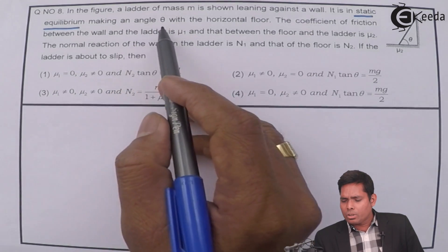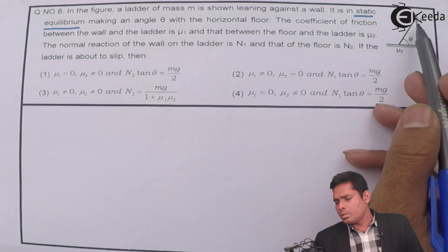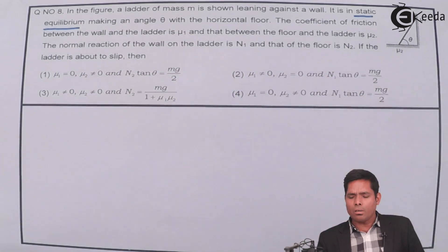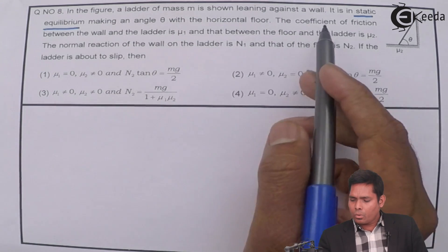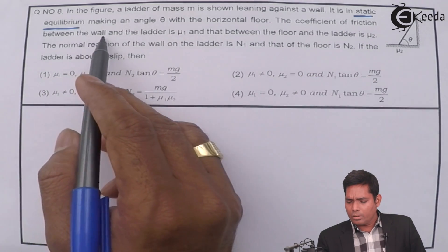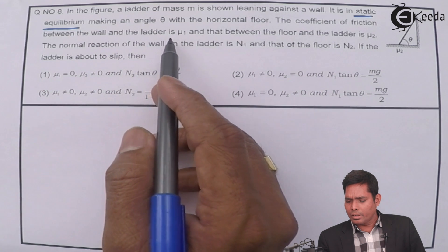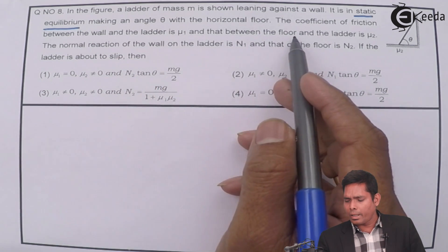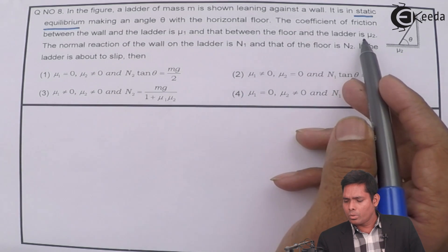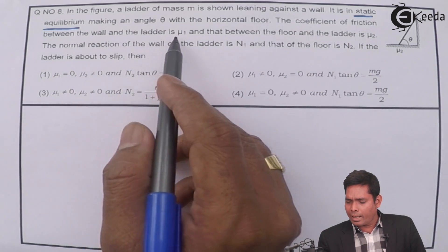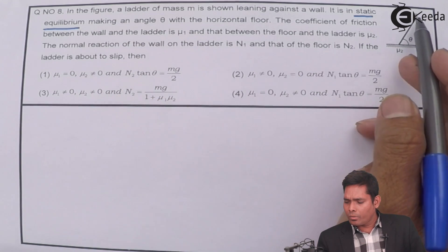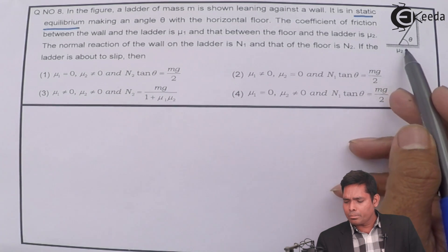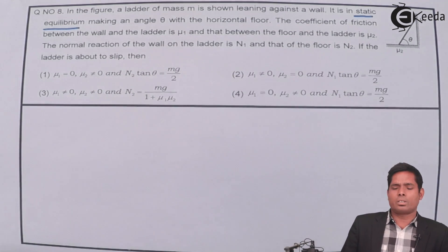The ladder makes an angle theta with the horizontal floor, as you can see here. The coefficient of friction between the wall and the ladder is mu1, and that between the floor and the ladder is mu2. These are the coefficients of static friction.